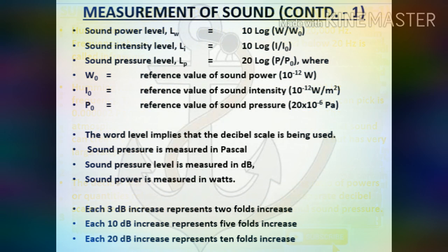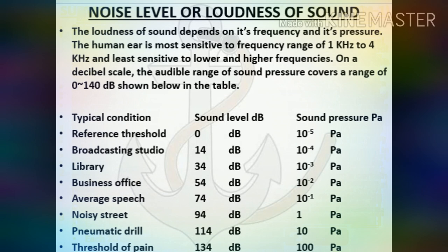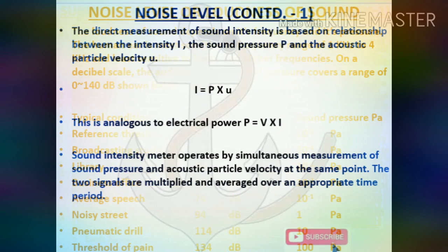Various relations important for sound measurement: the word 'level' implies that the decibel scale is being used. Sound pressure is measured in Pascal; sound pressure level is measured in decibel; sound power is measured in watts. Each 3 dB increase represents a two-fold increase; each 10 dB increase represents a five-fold increase; each 20 dB increase represents a ten-fold increase. The loudness of sound depends on its frequency and pressure. The human ear is most sensitive to frequency range of 1 kHz to 4 kHz and least sensitive to lower and higher frequencies. The audible range of sound pressure covers 0 to 140 dB.